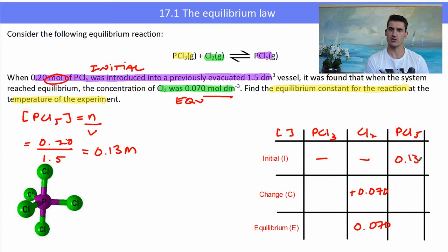Cl₂ and PCl₃ are on the same side of the reaction. So if Cl₂ has increased, then PCl₃ must have increased. They're in a one-to-one ratio, so they will increase by the same amount. The equilibrium concentration of PCl₃ is 0.070. For PCl₅, if the other two have gone up, the only way they could go up is if PCl₅ broke down. So it must go down by the same amount because it's a one-to-one ratio.